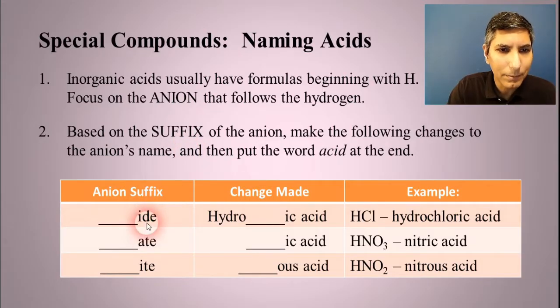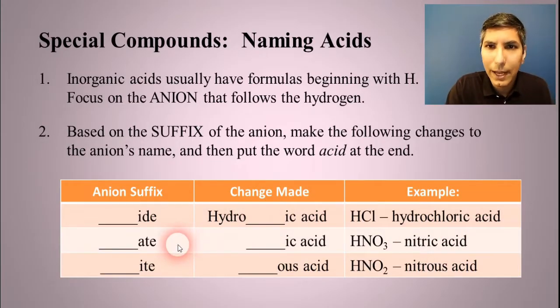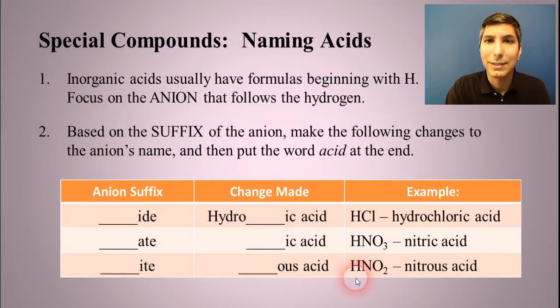Here's a little chart that shows you how to change that suffix. If the suffix is ide, you're going to change it to ic and then put hydro on the front of it. So for example, Cl is called chloride, so it's called hydrochloric acid. You'll have a lot of anions that have the suffix ate. Ate gets changed to ic in the case of an acid. So NO3 is the nitrate ion, so HNO3 is nitric acid. There are a lot of anions that end with ite. Ite gets changed to ous, O-U-S. So for example, NO2 is nitrite, so HNO2 would be called nitrous acid.